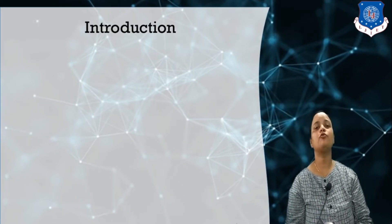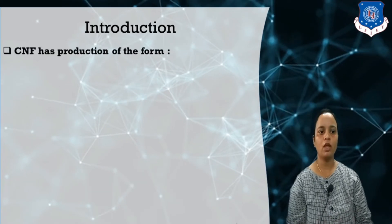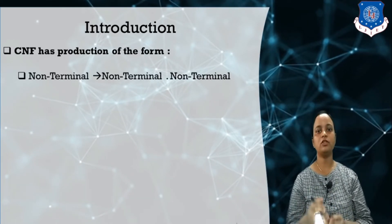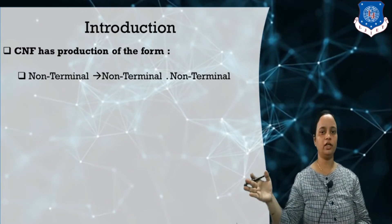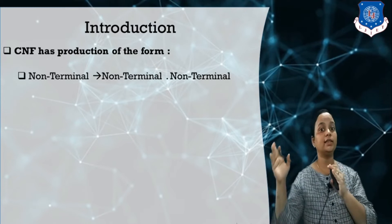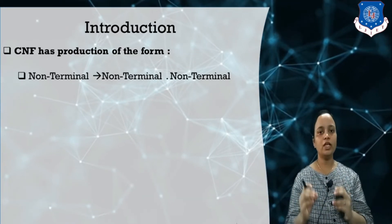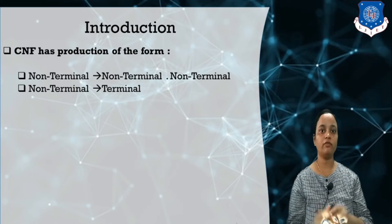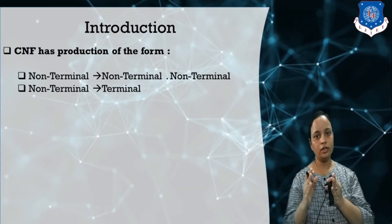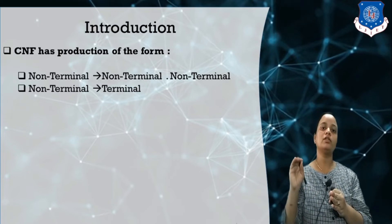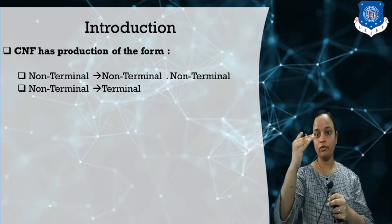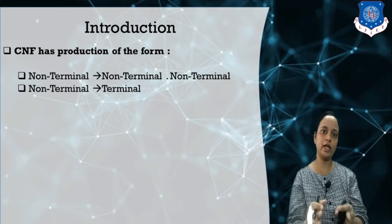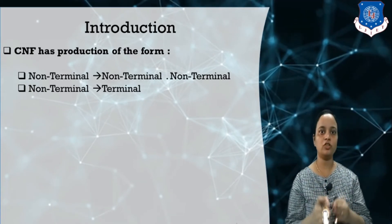First of all, we need to understand which form is called Chomsky Normal Form. If the context-free grammar has a production in the form where a non-terminal derives exactly two non-terminals, this form is called the CNF form. Also, if the right-hand side production contains a single terminal, if all the CFG productions are in these two categories, we can say that this is the CNF form — Chomsky Normal Form.